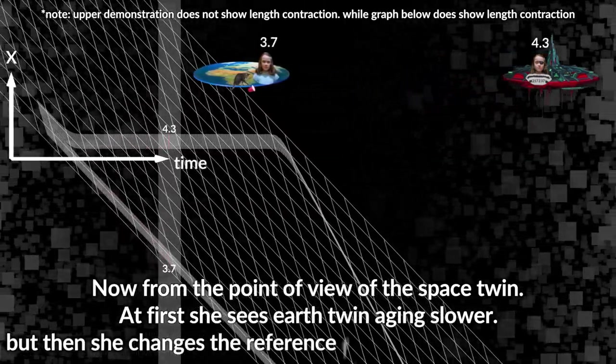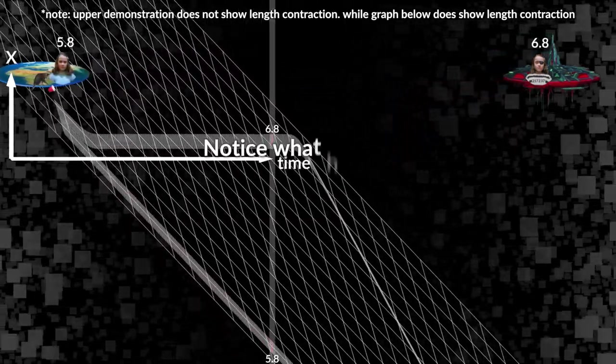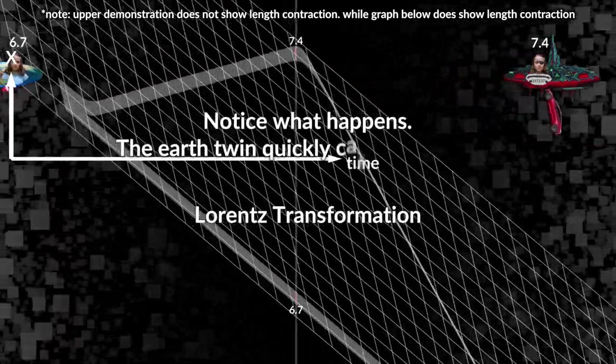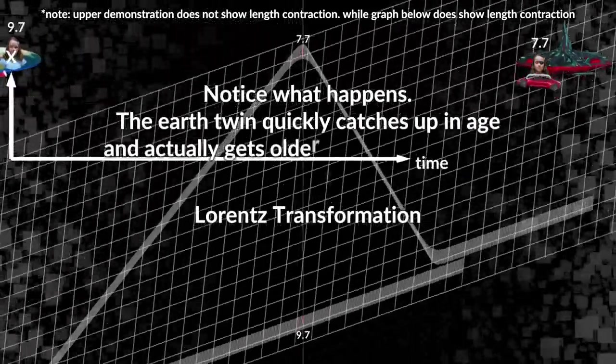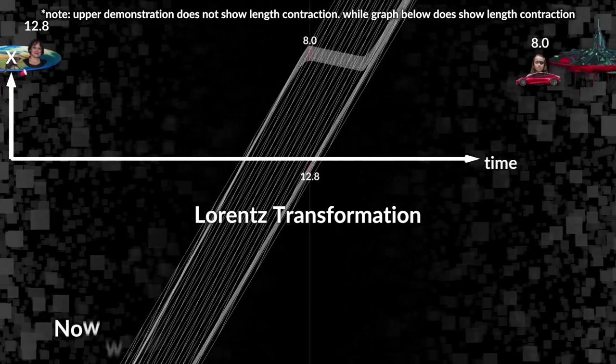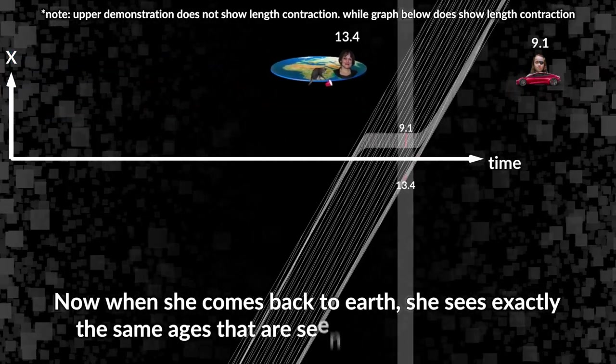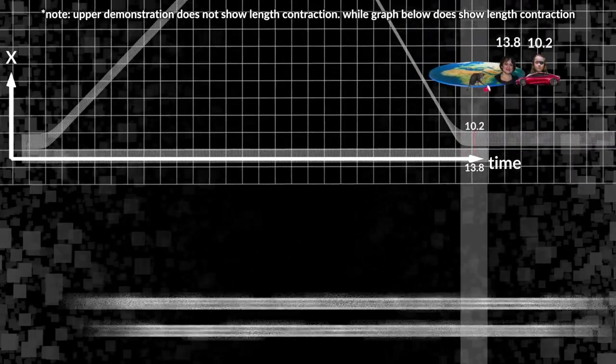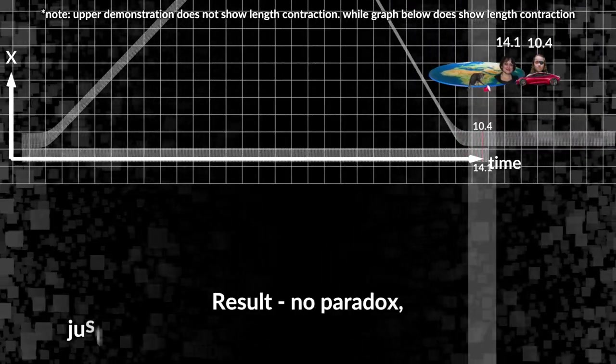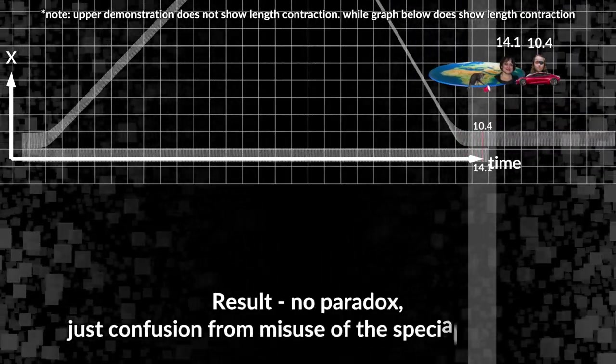Now from the point of view of the space twin: at first she sees earth twin aging slower, but then she changes the reference frame heading back to earth. Notice what happens - the earth twin quickly catches up in age and actually gets older than the space twin. Now when she comes back to earth, she sees exactly the same ages that are seen by the twin on earth.